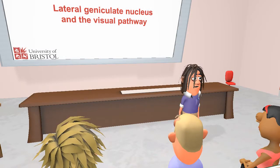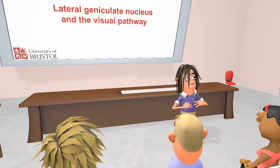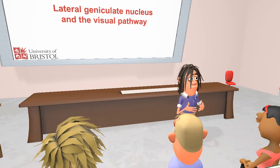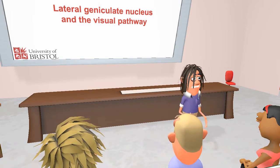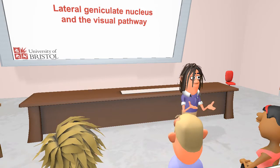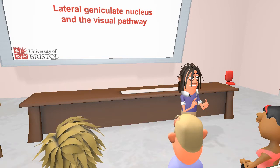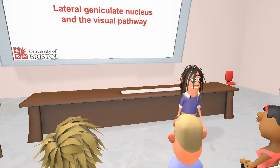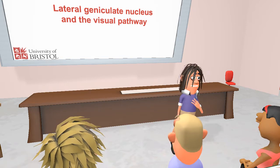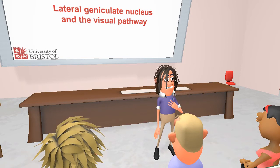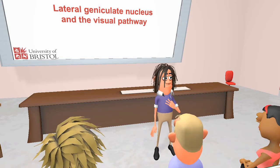We now come to the lateral geniculate nucleus. This is the major nucleus in the visual pathway. Its inputs are complex and I will give only a very simplified version of them here.